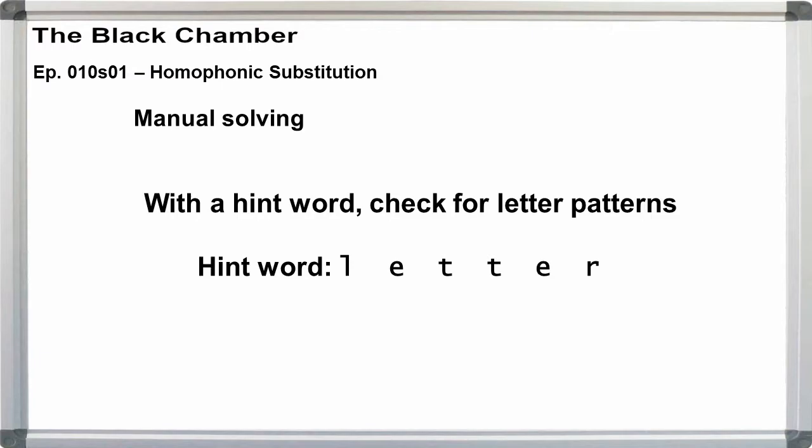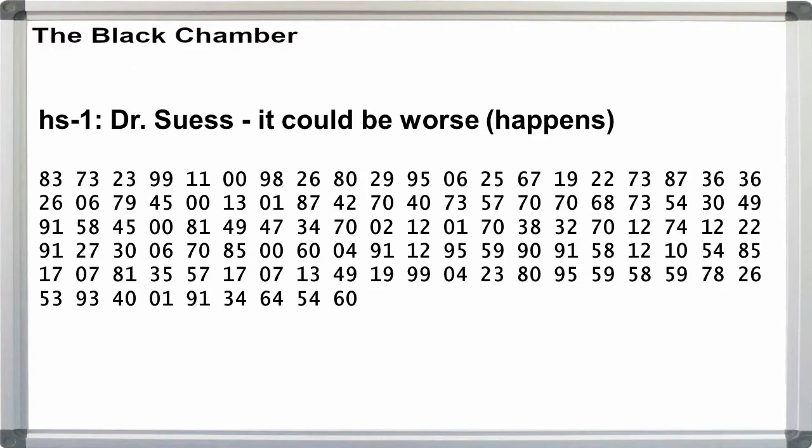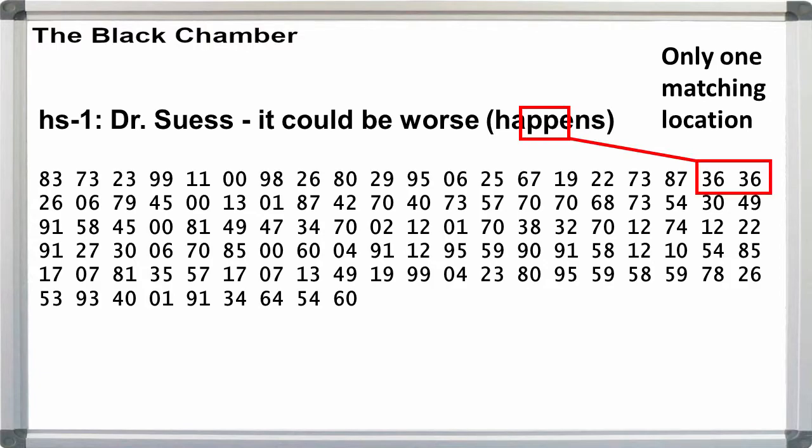First, if we have a hint word, check it for repeating letters. If the hint is a pattern word, maybe the pattern will appear in the cipher. It shouldn't, since the entire idea of homophonic substitution is to flatten out the letter distribution and reduce the number of patterns visible to us. But it can still be worth it to check. Using practice cipher HS1 from the homophonic introduction video, we have Dr. Seuss, it could be worse. Our hint is happens. It is a pattern word with the PP pair. We want to check for two identical numbers right next to each other. And we're lucky. 3636 leaps right out at us at the end of the top line.